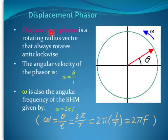The displacement phasor is a rotating radius vector that always rotates anticlockwise. This red arrow is the displacement phasor rotating anticlockwise, and the angular velocity of this phasor is given by omega equals theta (the angle) divided by the time traveled. The vertical projection of this rotating phasor will be simple harmonic motion moving up and down.